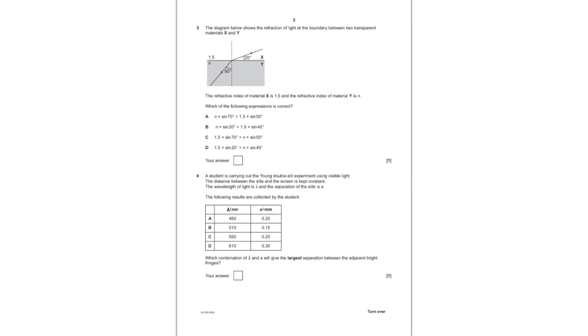Question number three. We have been given a diagram which shows the refraction of light at the boundary between two transparent materials, X and Y. The refractive index of material X is 1.5, whereas that of Y is N. Which of the following expressions is correct? This is talking about the law of refraction, which is Snell's law, and it's written as N1 sine I equals N2 sine R. Now, be careful in this question because angle of incidence is not 20. Angle of incidence is 70 degrees, because it's with respect to the normal. And if N1 is 1.5, sine of 70 equals N2, which is just N, sine of 50 degrees, so the correct option is C.